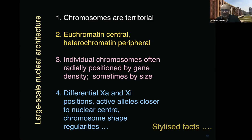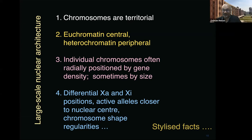You can find systems where one or another of these statements is not true — where euchromatin is peripheral and heterochromatin is central, for example. As in all of biology, there are counterexamples. What we're doing is extracting factors that seem broadly similar across metazoan cells and asking whether we can find a common explanation for them, while acknowledging that edge cases have other reasons for their behavior.